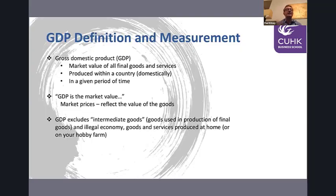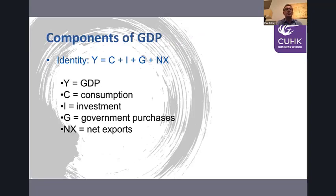A couple of definitional things: GDP, gross domestic product, is the value of all final goods — not goods along the way in the supply chain, but final goods produced within a country in a given period of time. When we look at GDP, we look at an important equation from first-year undergraduate all the way to PhD studies: income equals expenditure. The right-hand side components are C for consumption, I for investment, G for government spending, and NX for net exports.